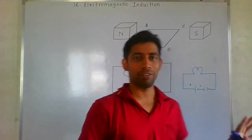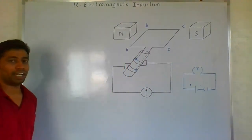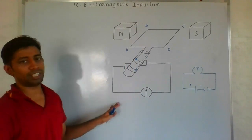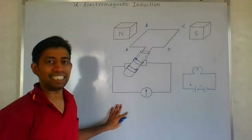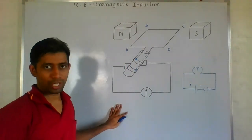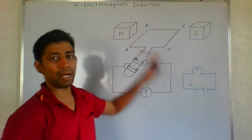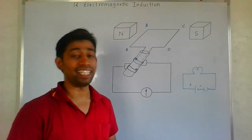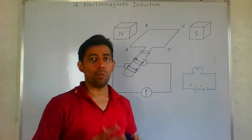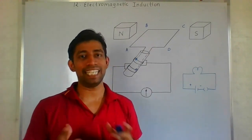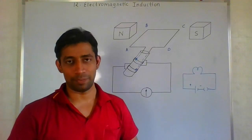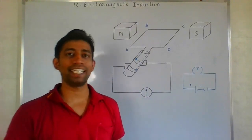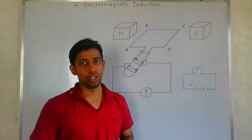I have drawn a diagram of a generator — this is an AC generator, specifically the internal part of an AC generator. So first of all we should understand what is AC and what is DC. Full form — do you know — alternating current and direct current.